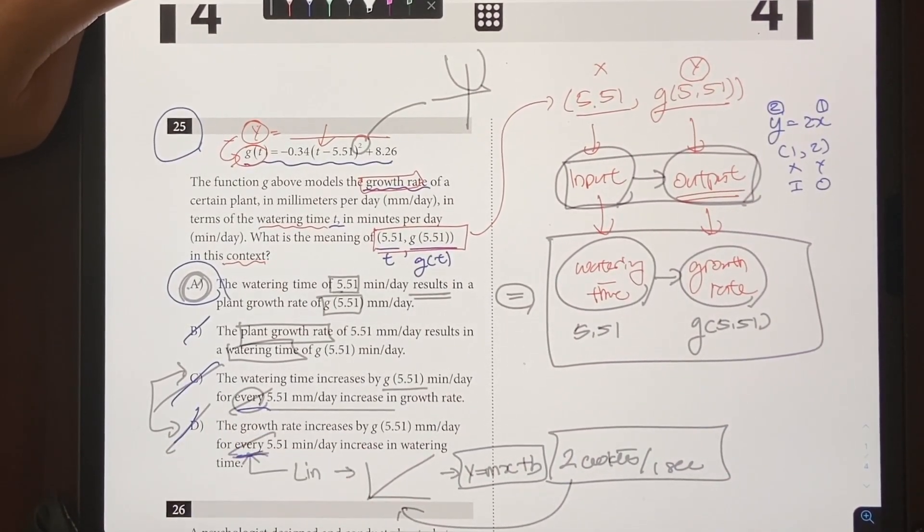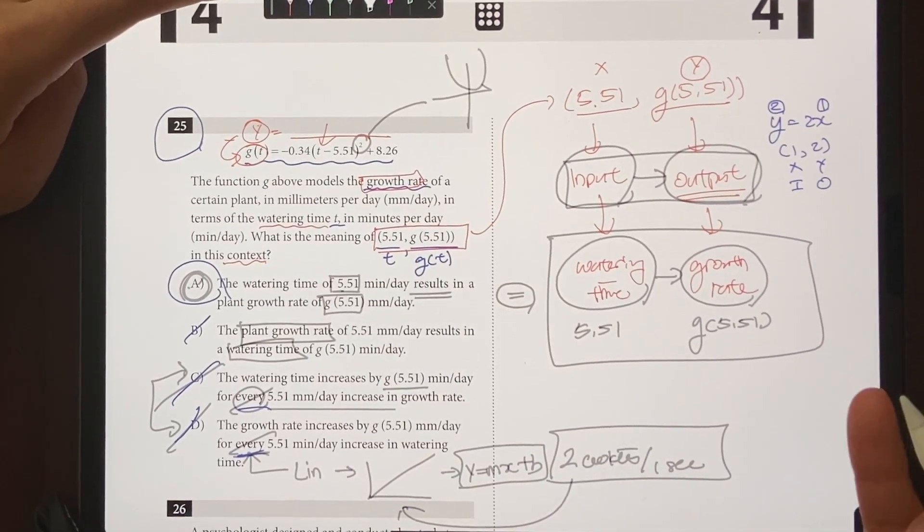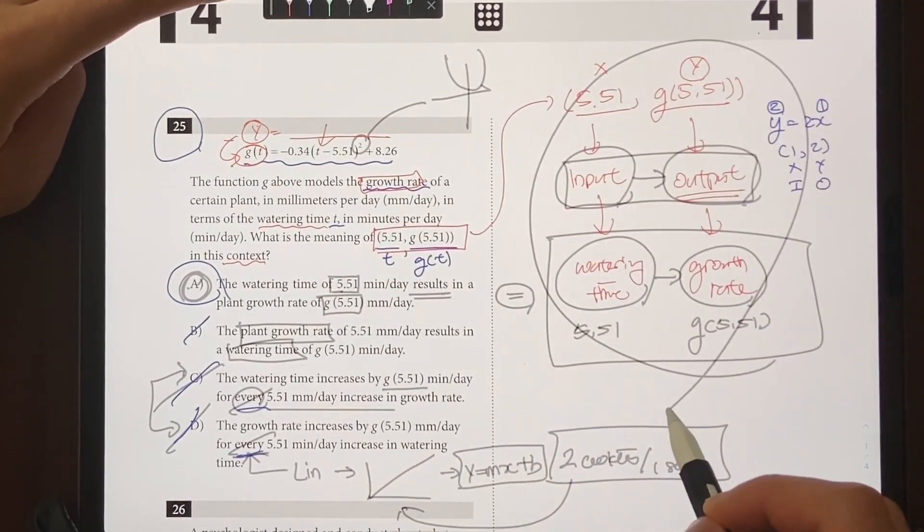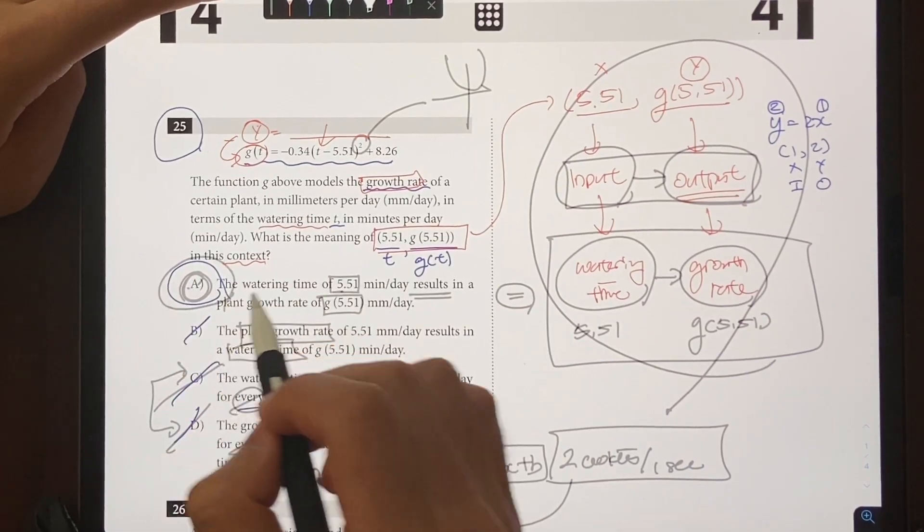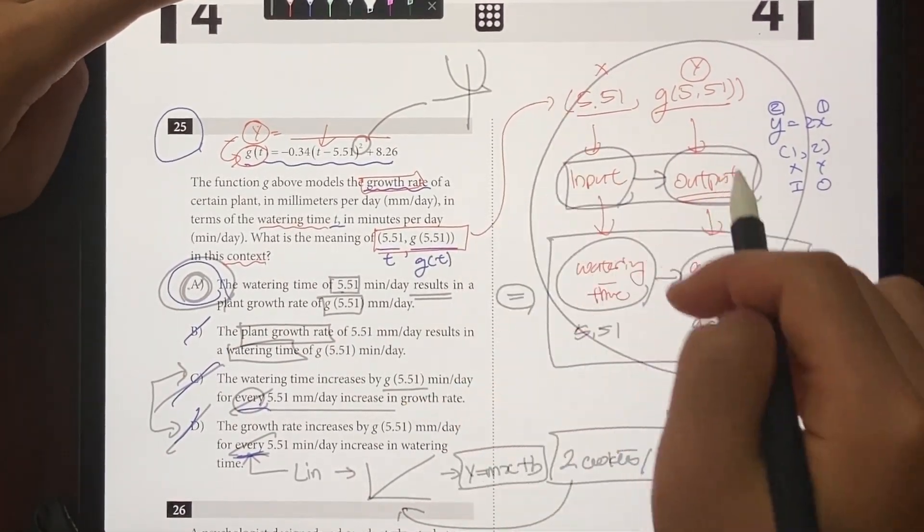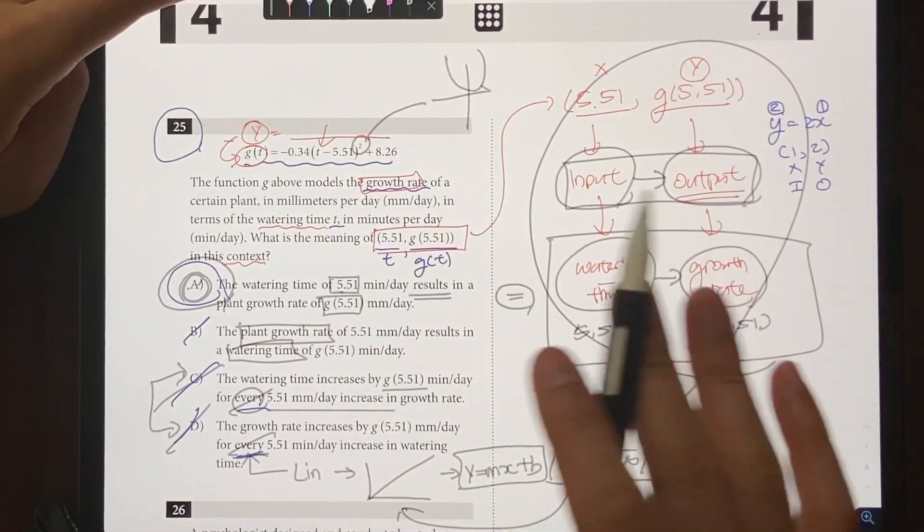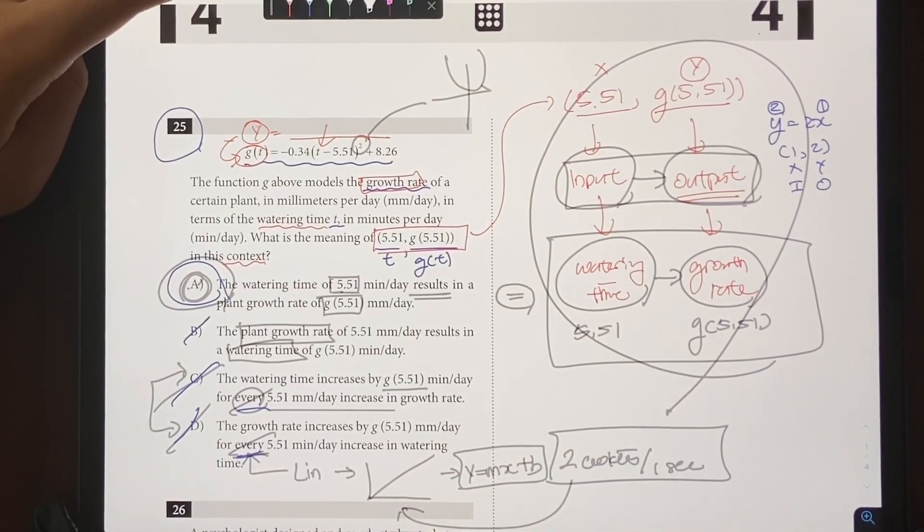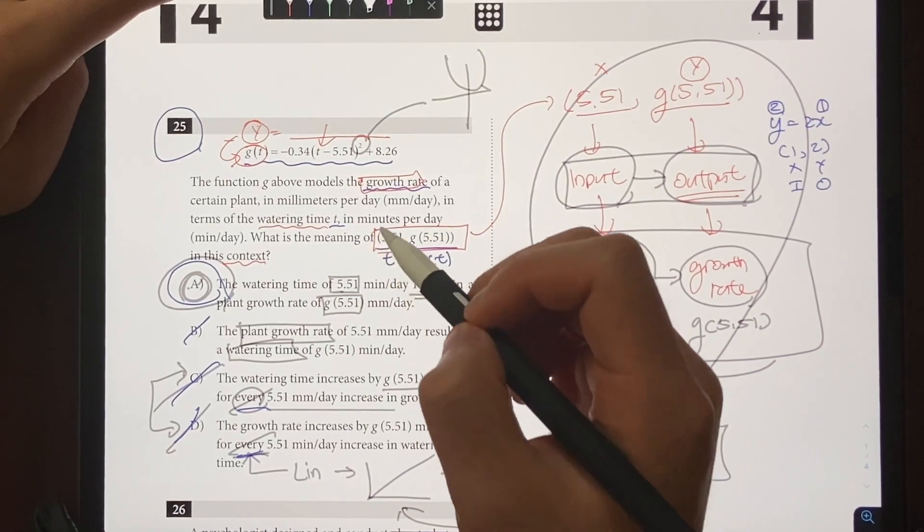So when you have a strong understanding of the concepts, you're going to be able to do this process quickly and realize that A is going to be the answer. If you can do this process in just one minute, you're on the same level as perfect scoring students. And to do that, you're going to need a strong understanding, strong foundation on the concepts. And specifically for this question, this question was testing you on the concept of functions.